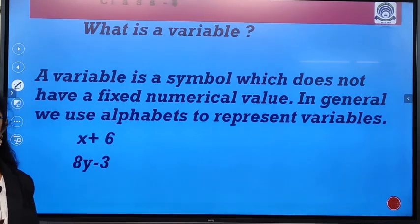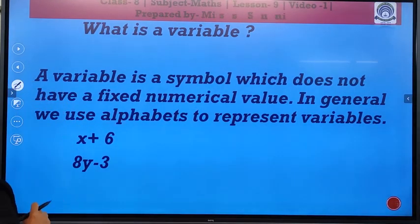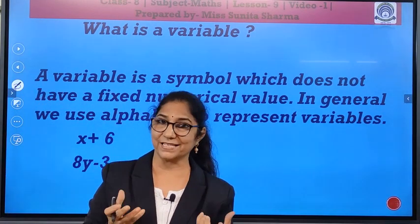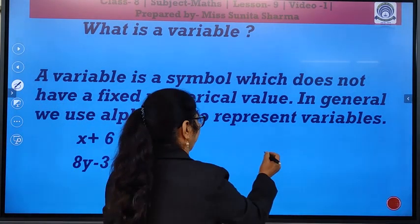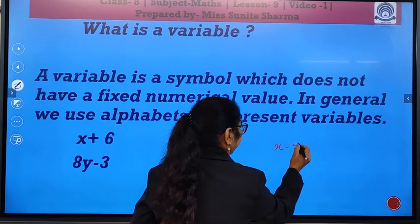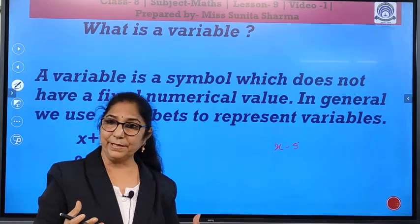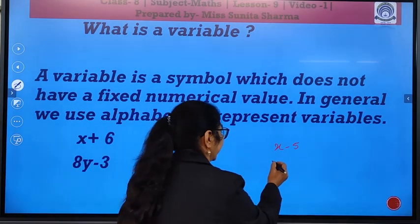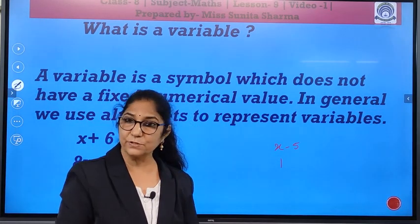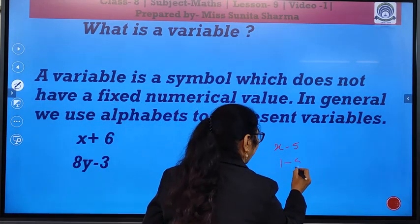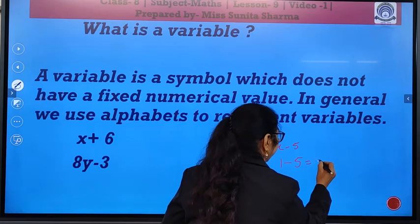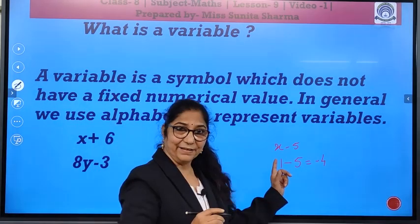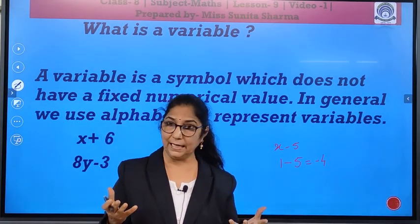Now, we should know what are variables. As I told you, variable is a symbol which does not have a fixed numerical value. Suppose if I write x minus 5. Now, x can be 1, it can be 2 also, it can be 5, anything you can take. Suppose if I write here 1, take the value of x as 1, then x minus 5, that is 1 minus 5, you get minus 4. So, x is a variable.